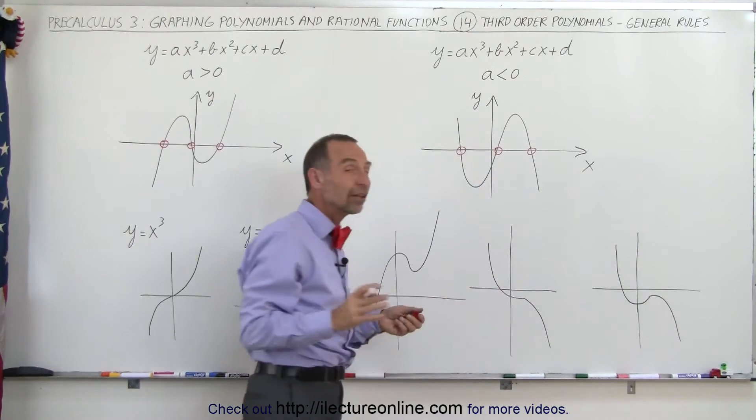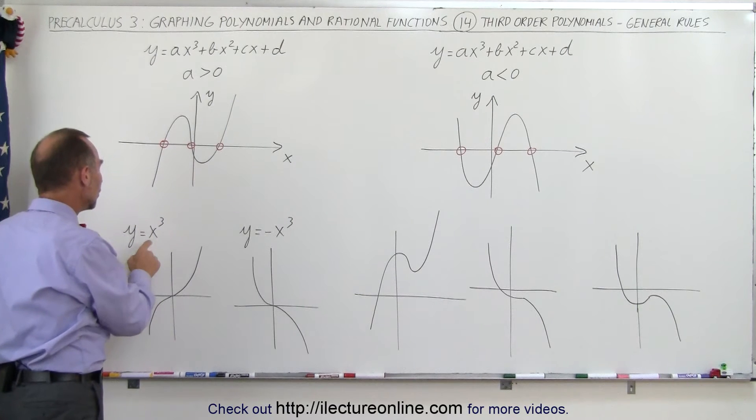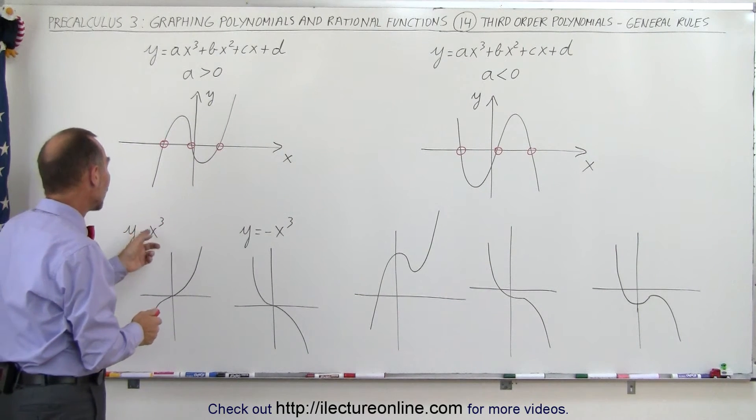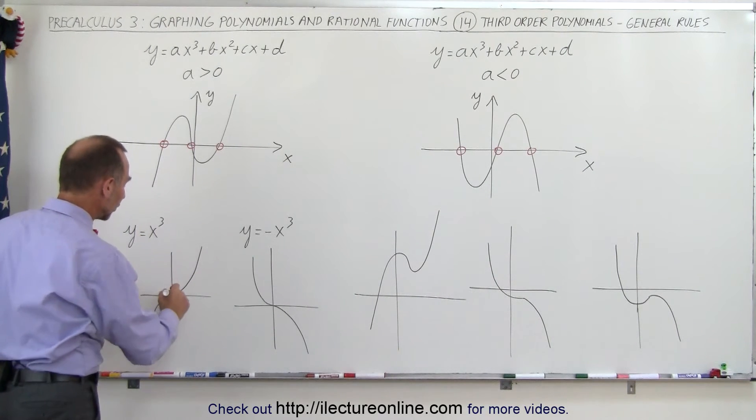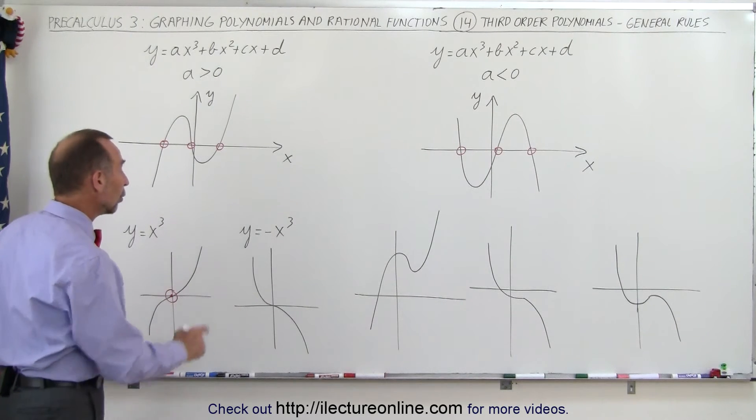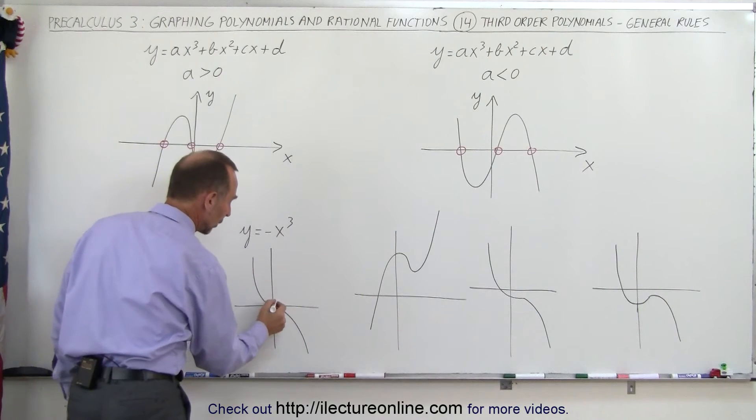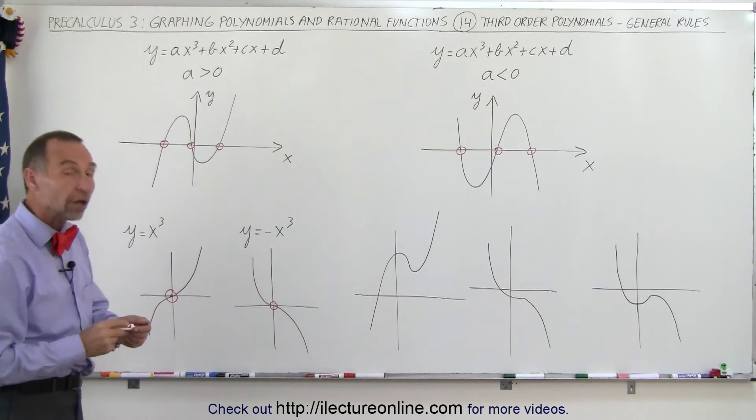Or it can have less roots depending upon what the equation looks like. In the case where we have y equals x cubed, and it could be a constant times x cubed, or just simply one times x cubed, you can see that the polynomial looks like this, and there's only one root right there where it crosses the origin. Or if it's y equals minus x cubed, you can see that again there's only one root right here where it crosses the origin.